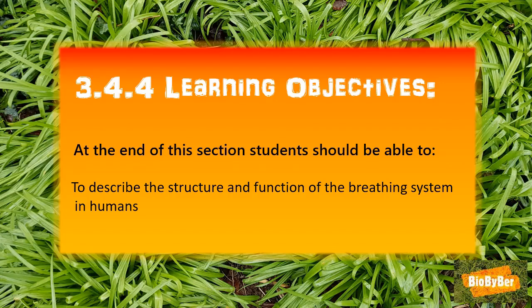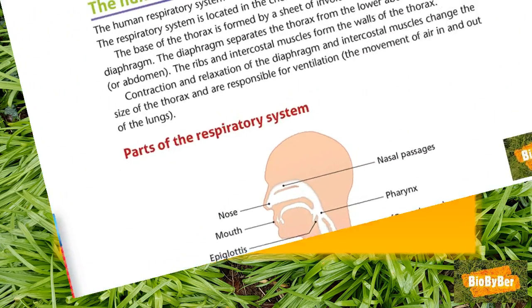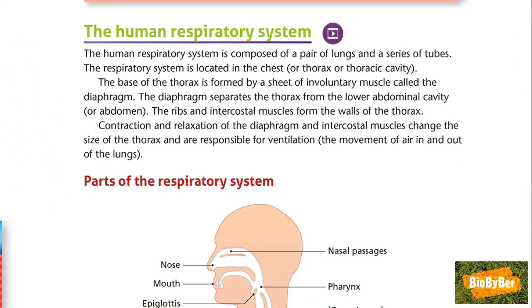Hi biologists, let's start by looking at the learning objectives for this lesson. At the end of this section you should be able to describe the structure and function of the breathing system in humans. This basically means that you have to be able to draw a diagram of the lungs, label it and know the function of each part. Reading Chapter 30, Human Breathing, picking it up at page 338 at the heading of the human respiratory system.